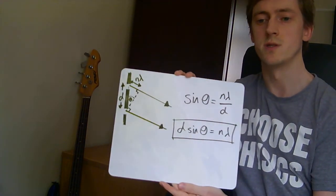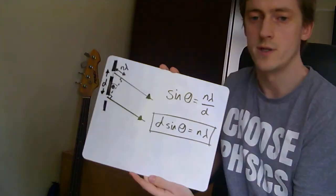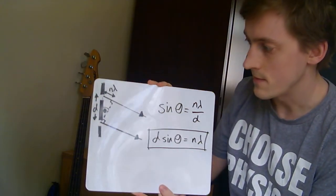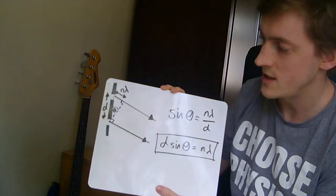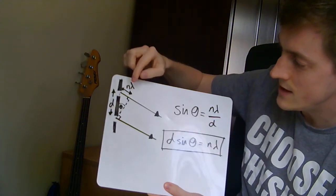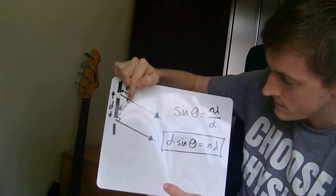So the question becomes, what is theta? How can we work out what theta is? And in order for us to get an order, we need to have this extra path difference, this extra distance that this top ray has got to travel.